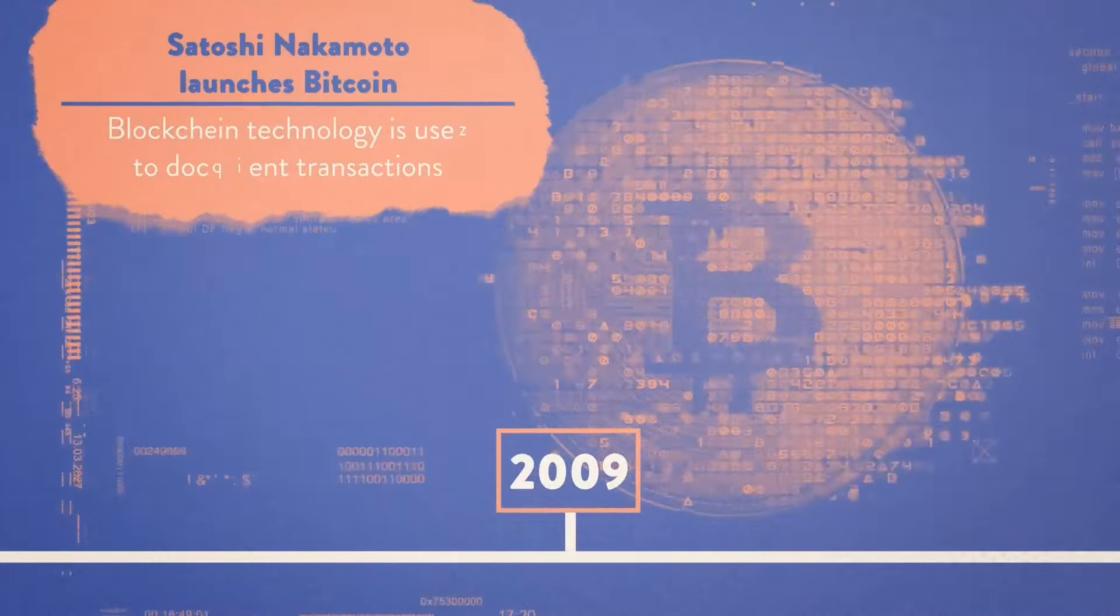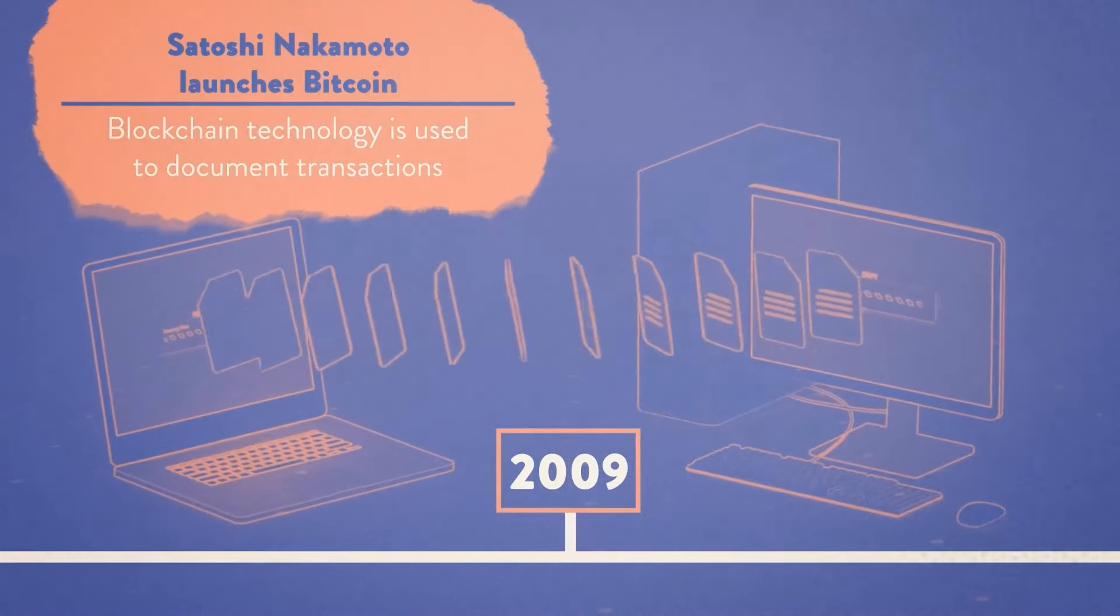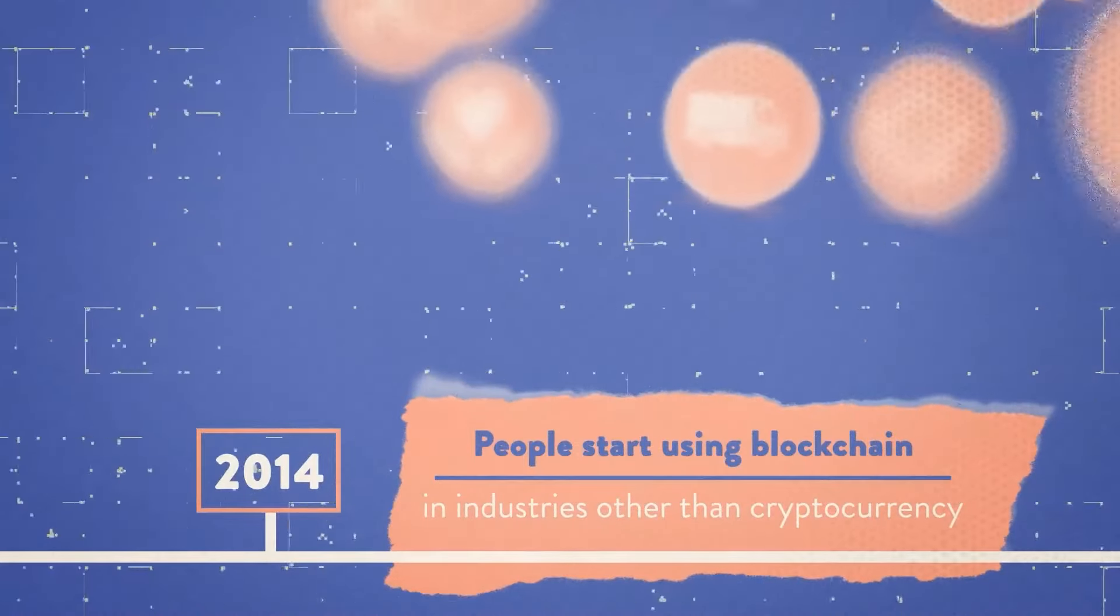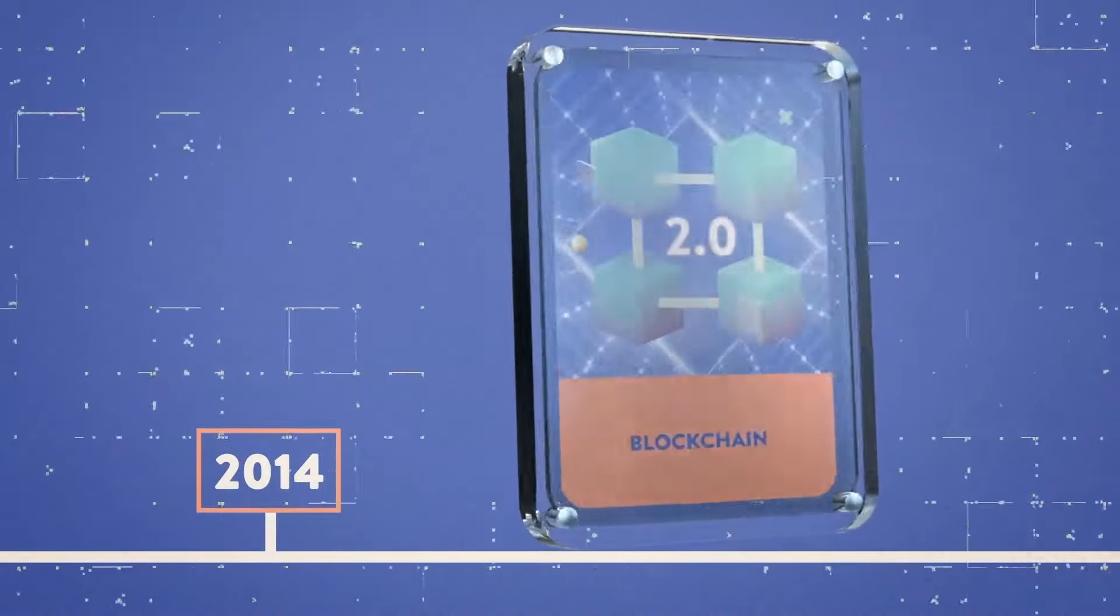2009. Satoshi Nakamoto launches Bitcoin and blockchain technology is used to document transactions. 2014. People start using blockchain in industries other than cryptocurrency, an era known as blockchain 2.0.